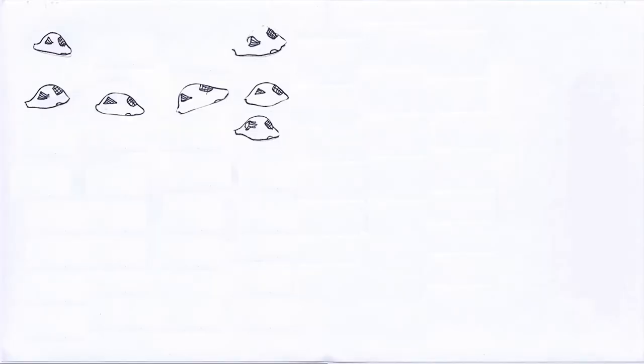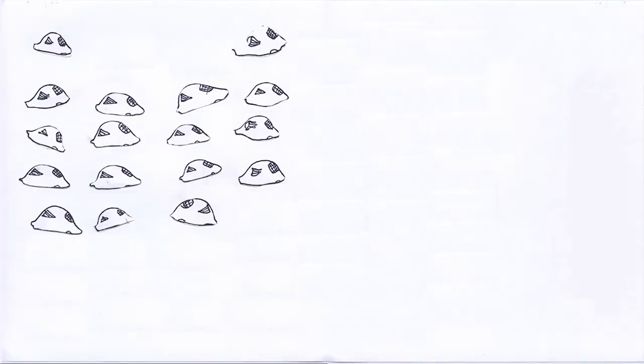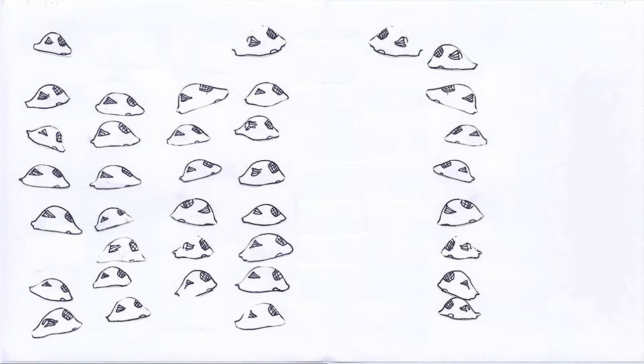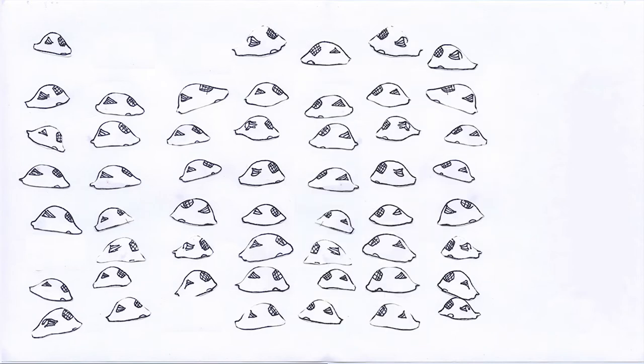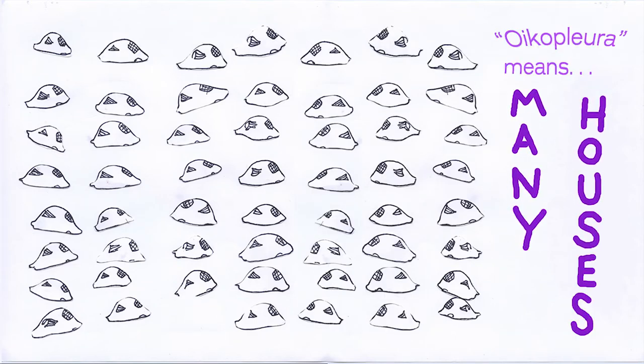Oicaplera dioica makes several houses a day, each one of them equally intricate and disposable. By the end of its several-day lifespan, Oicaplera has discarded many feeding structures.